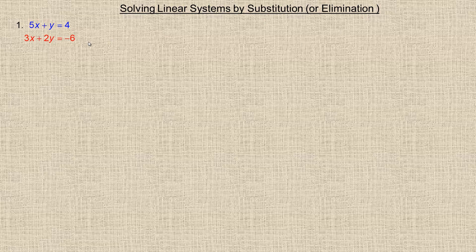Substitution is most convenient when you can fairly easily solve for y or x without getting into any rational expressions or fractions. What that often translates into is having at least one coefficient of 1 or negative 1 on either variable. In the first equation, 5x plus y equals 4, there's a coefficient of 1 on y, so it's fairly easy to rearrange and isolate y.